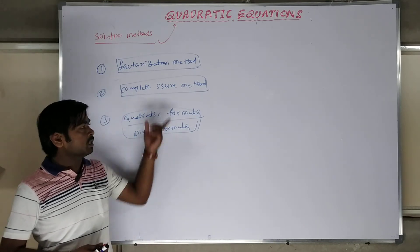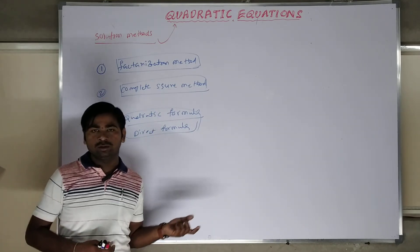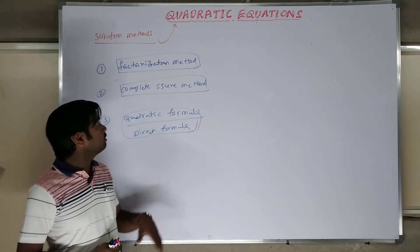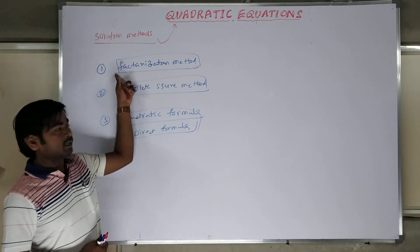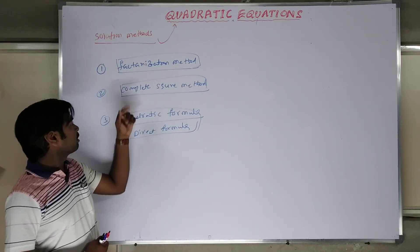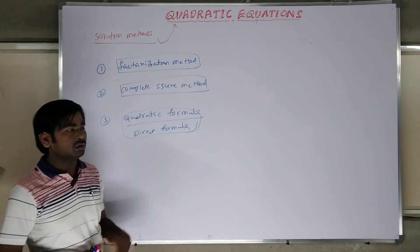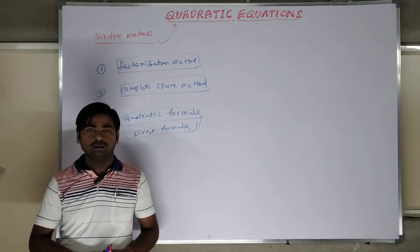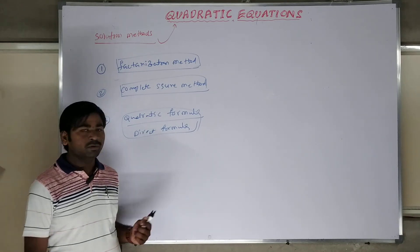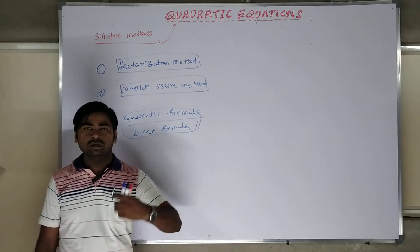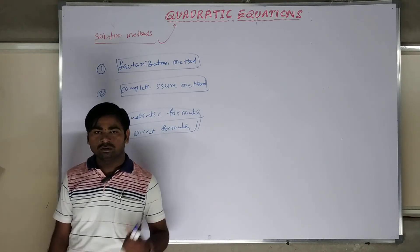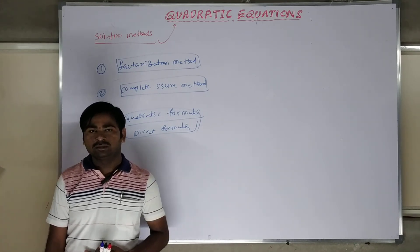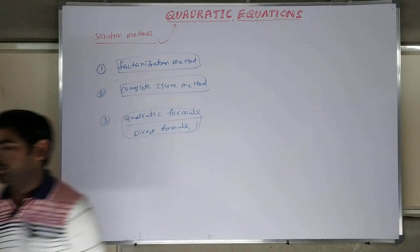We have three different methods to solve a second-order equation. Next class I will go through each method one by one — factorization, complete square method, and quadratic formula — I will explain very clearly. Please continue for the next class to get more updates. Time flows, keep continuing.